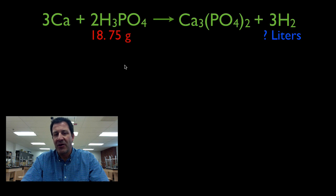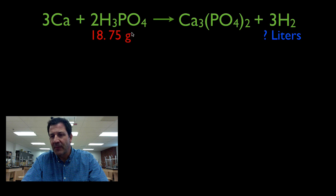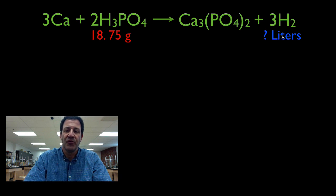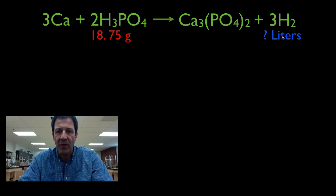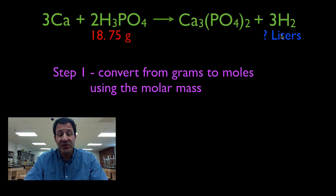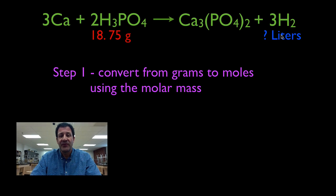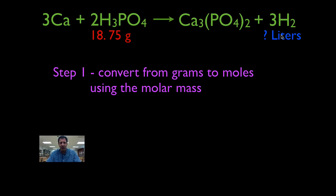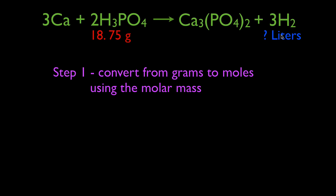We want to know: if we start with 18.75 grams of phosphoric acid, how many liters of hydrogen gas are we going to produce? Because it's a molar relationship, the first thing we have to do is convert from grams to moles, and we're going to do that using the molar mass.